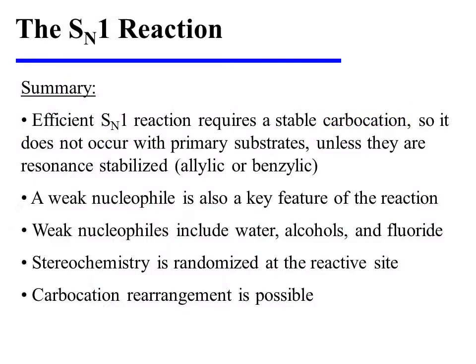In summary, efficient SN1 reaction requires a stable carbocation intermediate. Consequently, it does not occur with primary substrates unless they are resonance stabilized, meaning allylic or benzylic substrates. A weak nucleophile is also a key feature of this reaction, and common weak nucleophiles include water, alcohols, or fluoride. Stereochemistry will be randomized at the reactive site because the carbocation intermediate has trigonal planar geometry and the nucleophile can add to either side of that carbocation. Carbocation rearrangement is also a possibility.